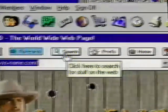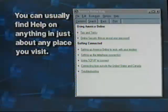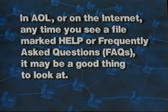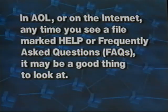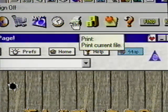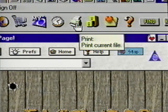Back to the options on our web page — you see we have a search button. This opens the same AOL NetFind page. Anytime you want, you can enter search mode by clicking this button. Also remember you can change this button to open other search pages in the prefs window. You can find help on anything in just about any place you visit — in AOL or on the internet. Anytime you see a file marked Help or FAQs — that's frequently asked questions — it may be a good thing to look at. One more icon I'd like to point out is the printer: just click this icon while in the site you'd like to print and you'll have a hard copy of that page.